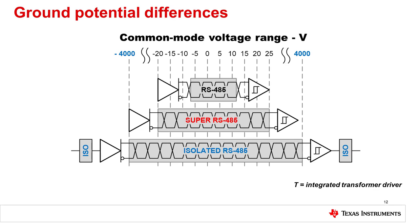When grounding an RS-485 system, the ground potential difference should not violate the common mode specification for the transceiver, which the RS-485 standard specifies as at least negative 7 volts to positive 12 volts. Some transceivers support even higher voltages, from negative 20 volts to positive 25 volts. In cases where very large ground potential differences could occur, an isolated RS-485 transceiver should be used.